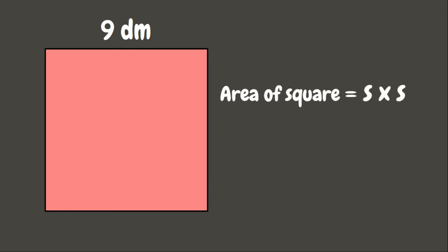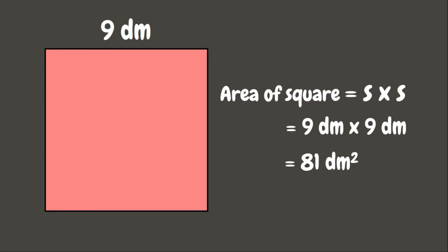We have another square, but this time each side measures nine decimeters. The formula for the area of a square is side times side, or s². Here, the measure of the side is nine decimeters, so that will be nine decimeters times nine decimeters. If we multiply that, it will be eighty-one square decimeters, and that is the area of this square.